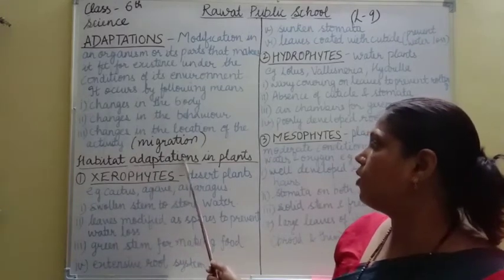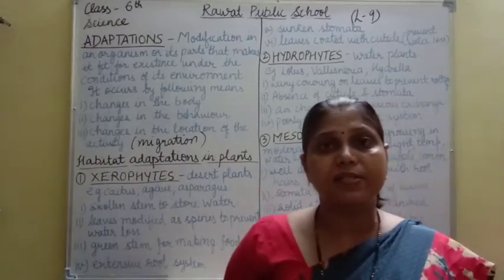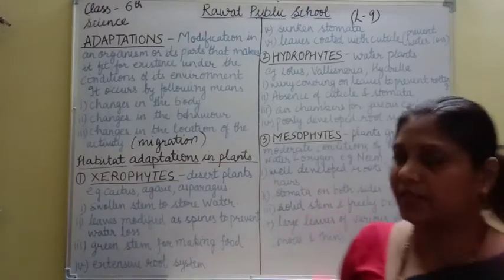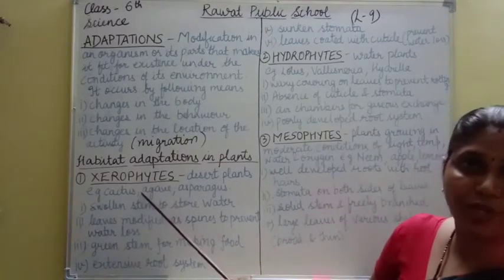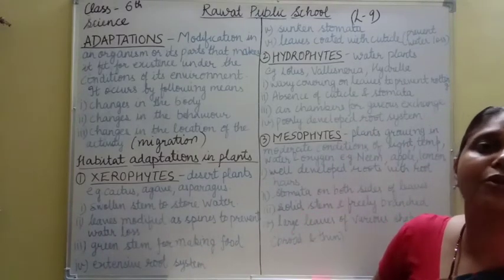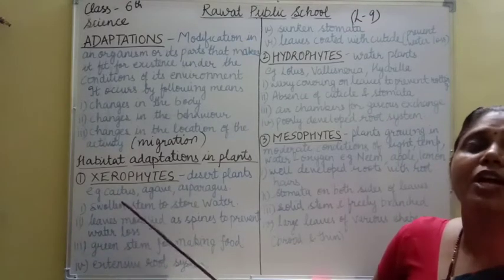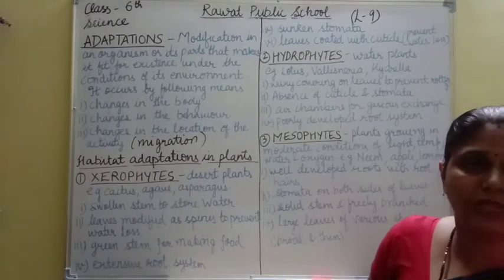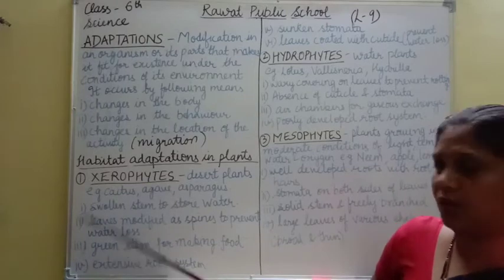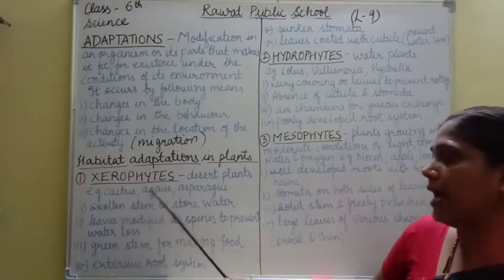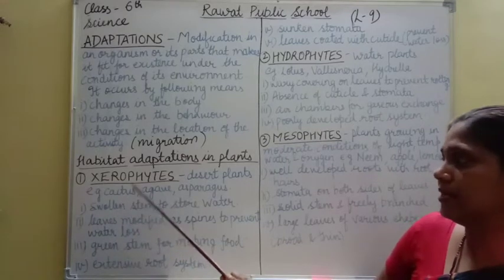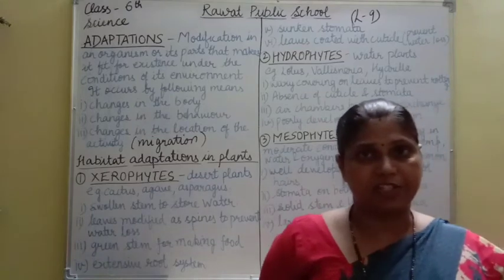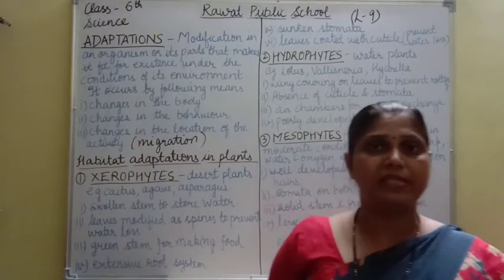Now coming to habitat adaptations in plants. Plants in different habitats adapt in different ways. First, we are talking about xerophytes — xerophytes means plants that grow in the desert. These are desert plants which survive in the absence of water or with very low water. Examples are cactus, agave, and asparagus. These are desert plants and they have specific adaptations to survive in that atmosphere.